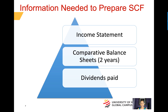To prepare a statement of cash flows, information is needed from the income statement and comparative balance sheets — two years to be exact. The income statement provides income statement accounts if you're using the direct method. If using the indirect method, the income statement would provide net income, depreciation, amortization expense, and gains and losses. The comparative balance sheets provide changes in assets, liabilities, common stock, and preferred stock. The change in the retained earnings account does not affect the statement of cash flows. Total dividends paid to shareholders is another piece of information needed.